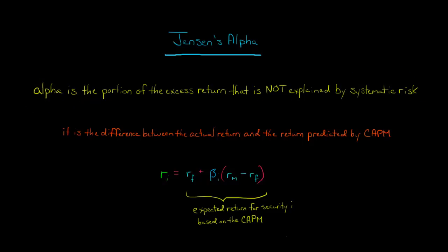When I talk about systematic risk, I mean beta. Another way of putting it is that alpha is the difference between the actual return of the security or the portfolio and the return that's predicted by the capital asset pricing model.